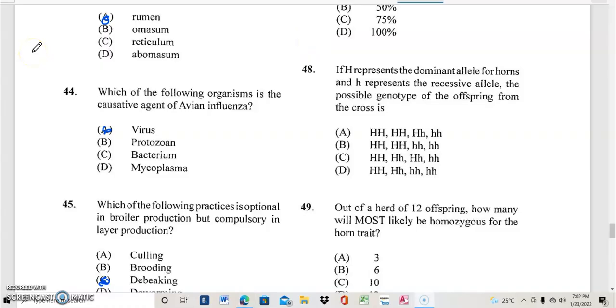Question 48. If capital H represents the dominant allele for horns and the common h represents the recessive allele, the possible genotype of the offspring from the cross is? And if your answer to 48 is C, you are very correct.